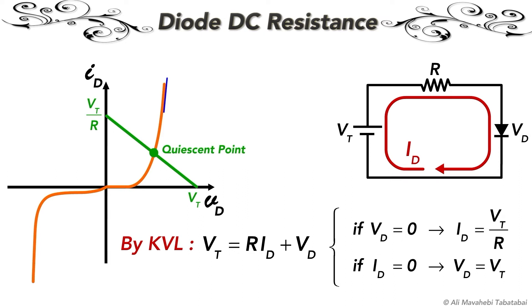The DC resistance of a diode at the specific operating point can be found by using this relation.